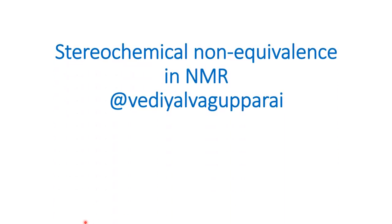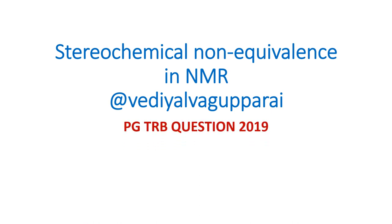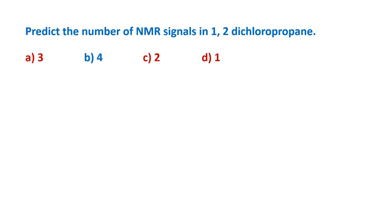Hello, welcome to Vedial Bhagaparai. In this video, we are going to see stereochemical non-equivalence in NMR spectroscopy. This video is based on a PG-TRB question of 2019. The question is: predict the number of NMR signals in 1,2-dichloropropane.